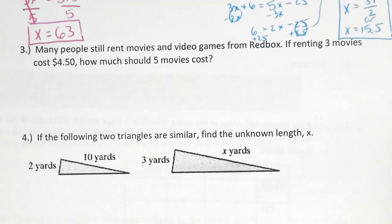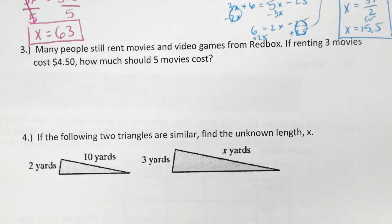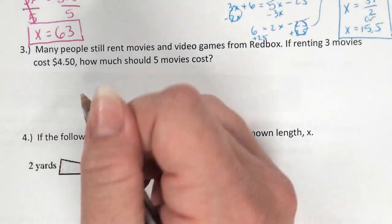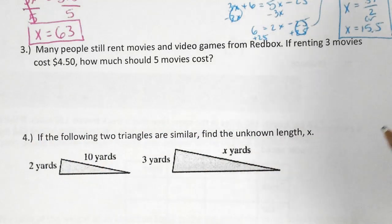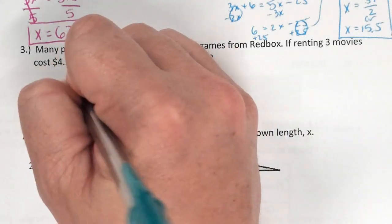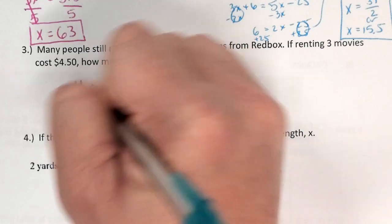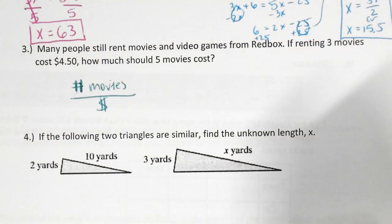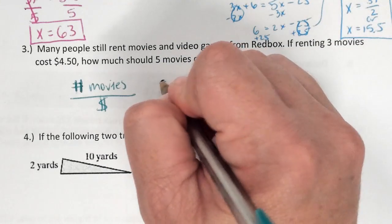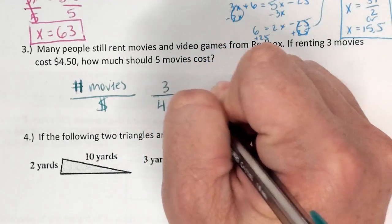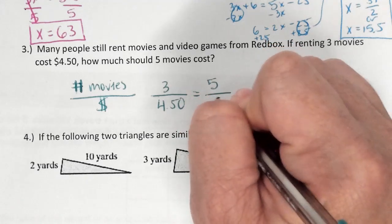Now, if the problem gives you decimals, can you give a decimal back? Yes. Okay, look at number 3. Now we're going into the word problems of it. So number 3 says, many people still rent movies and video games with Redbox. If renting 3 movies costs $4.50, how much should 5 movies cost? So we're going to set it up as proportions. So my first one is three movies over the cost of $4.50 equals five movies over a cost we don't know.